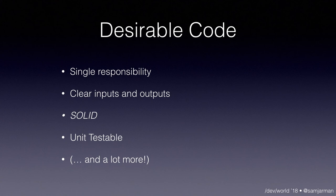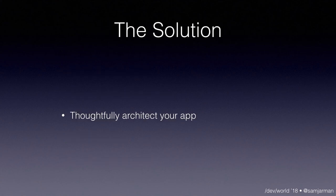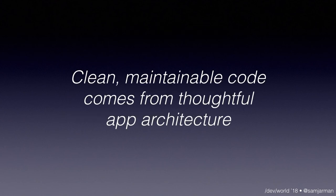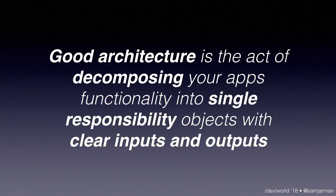So what's the solution? The solution is to thoughtfully architect your app. Clean, maintainable code comes from thoughtful app architecture. What is good app architecture? It's the act of decomposing the functionality of your app into single-responsibility objects with clear inputs and clear outputs. It's not massive view controller — it's many small things doing their job, talking to each other and being a good unit.